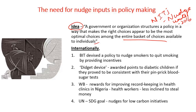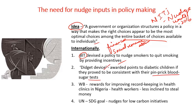Internationally, nudging is being used to change the contours of policy making. BIT — the British Government's nudge unit — uses financial incentives or other social remunerations. Another example involves nudging diabetic children to be consistent with error-pinprick blood sugar tests using a particular digit device. The World Bank also proposed rewards for improving record keeping in Nigeria's health clinics, which improved the status of those clinics.